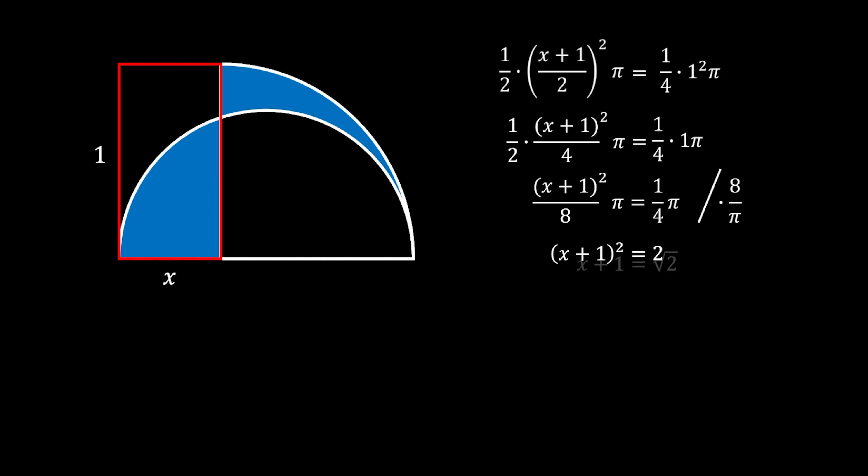That means x + 1 = √2, which means x = √2 - 1. Now we have the base of our red rectangle.